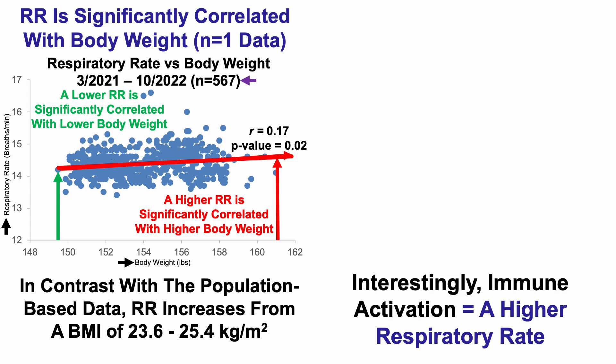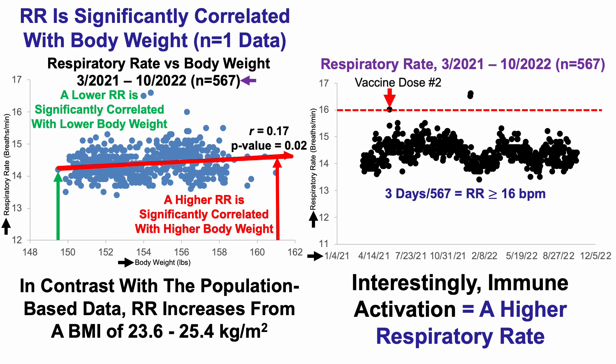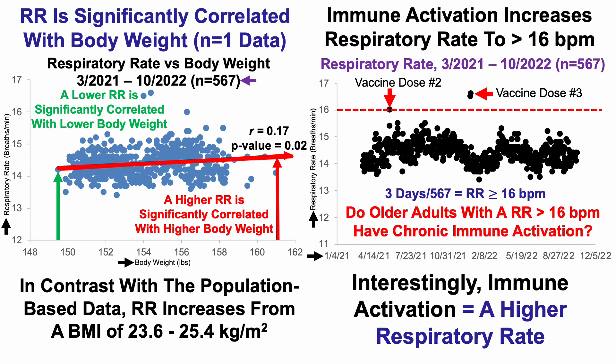Another factor that may impact nighttime sleeping respiratory rate is immune activation. Using the 16 breaths per minute cutoff based on the all-cause mortality data, only three days out of 567 tracked days had a respiratory rate higher than 16 breaths per minute in my data. On the night of vaccine dose number two, it was exactly 16 breaths per minute, and for the day of and the day after vaccine dose number three, it was again greater than 16 breaths per minute. This raises the question: do older adults with a respiratory rate greater than 16 breaths per minute have chronic immune activation — whether through undiagnosed infection with bacteria, fungi, viruses, etc.? A topic for another day.